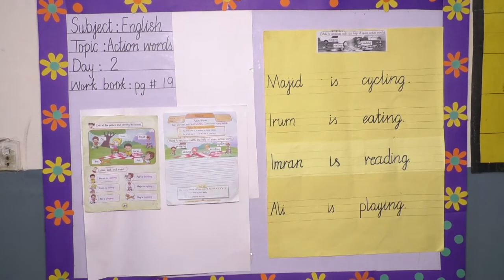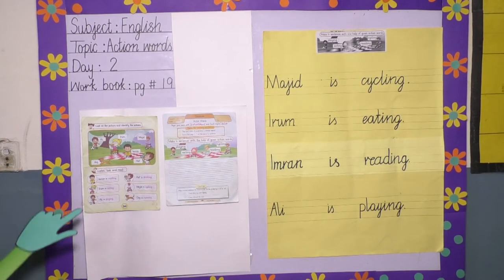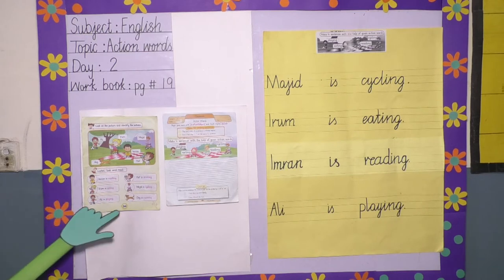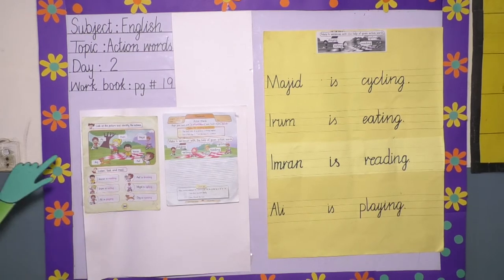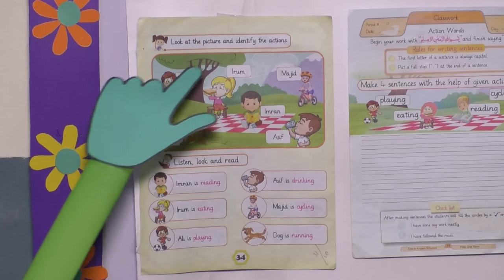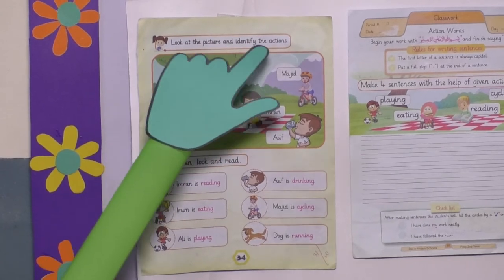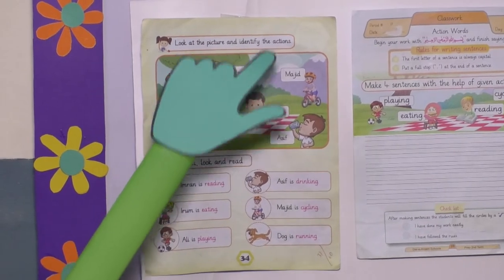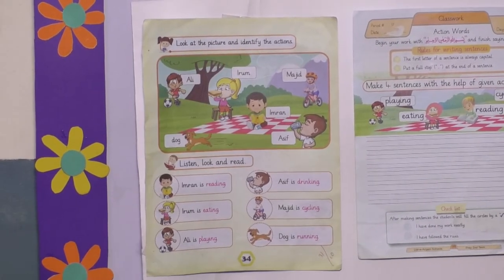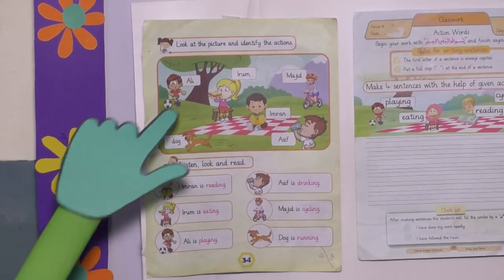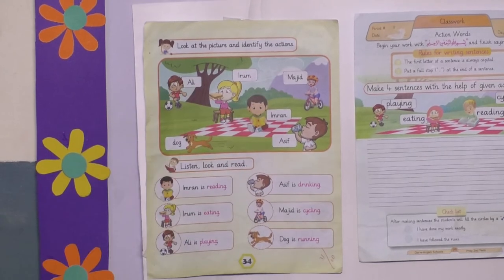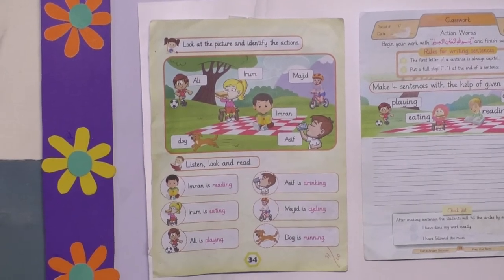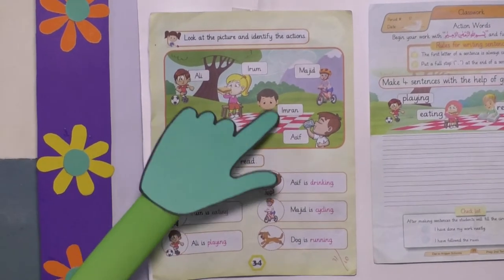Students, open your English book and open page number 34. Look at the picture and identify the actions. These are some nouns. What are they doing?